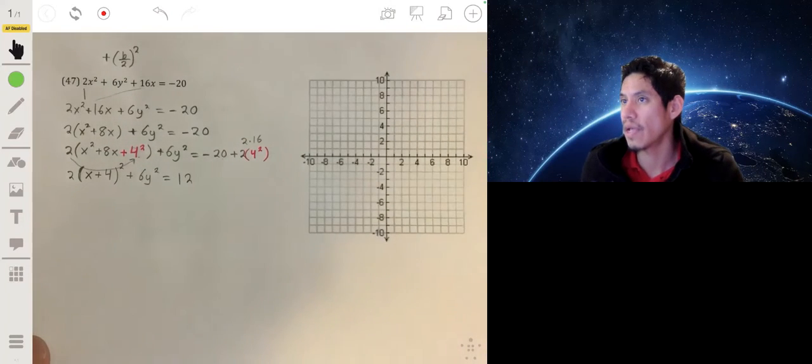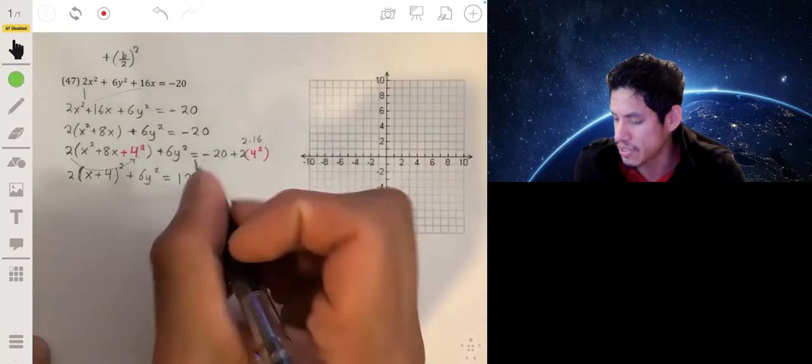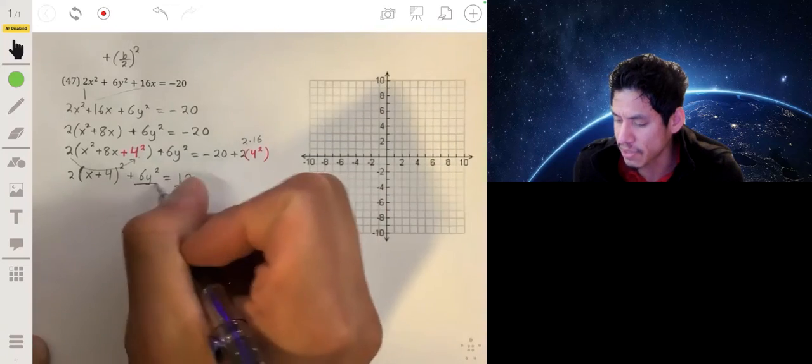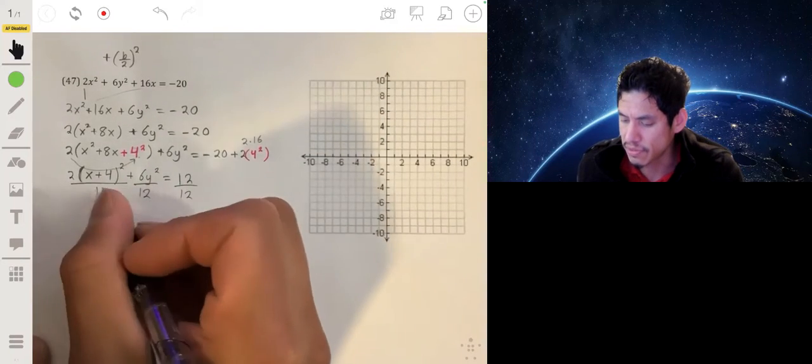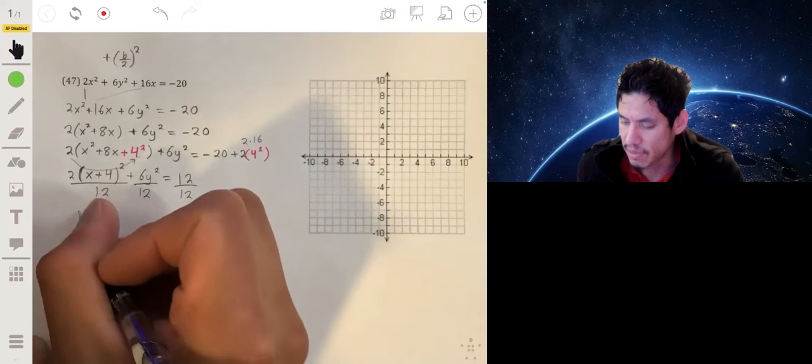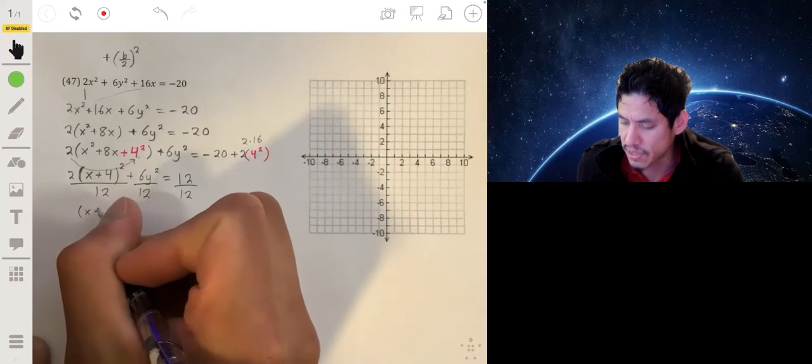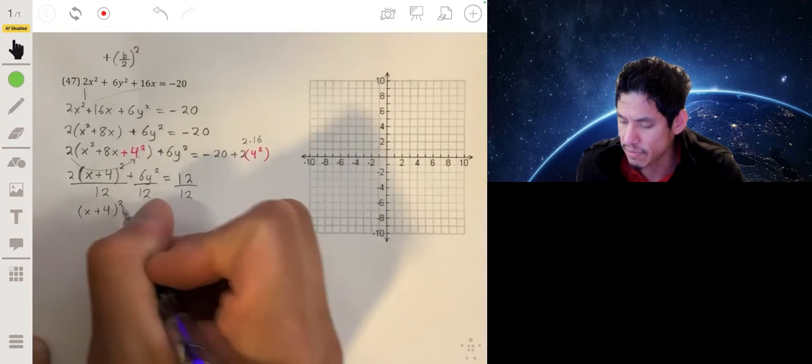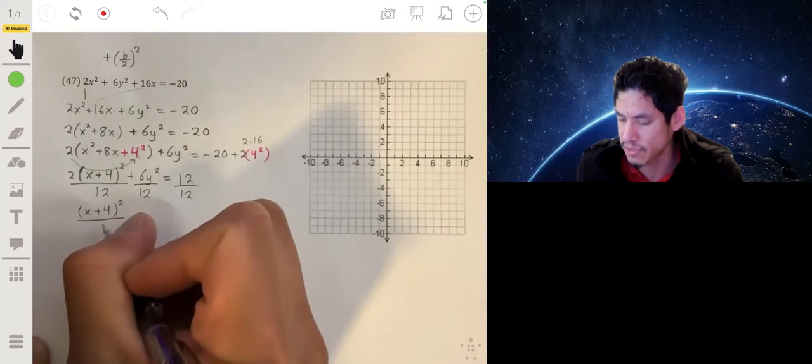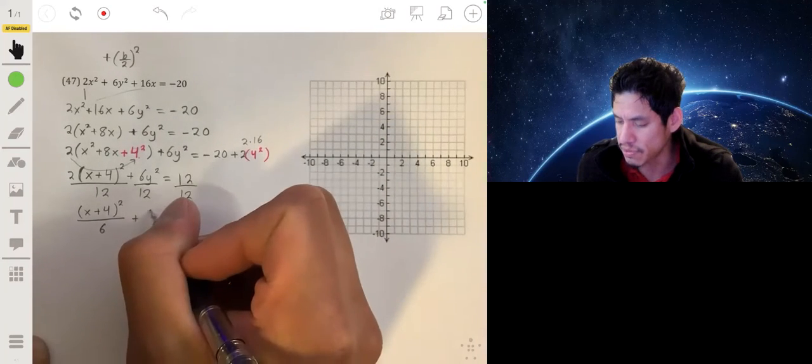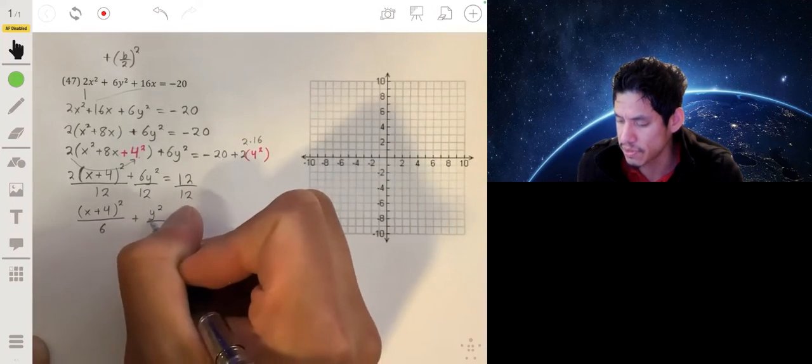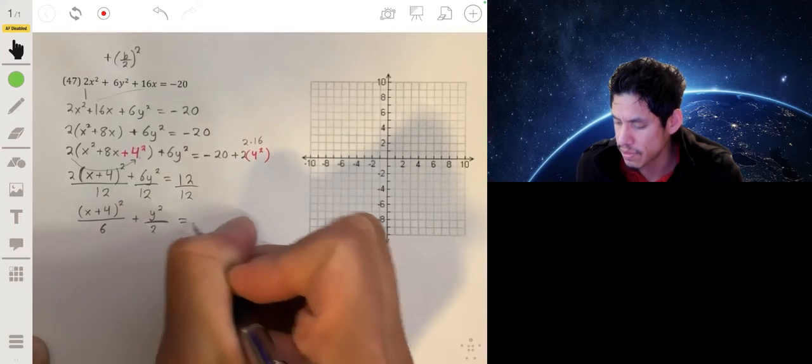And then what I do now is divide everything by 12 because I want to set the equation equal to 1. So I'll get 2 over 12, that'll be the same as 1 over 6, so we have x plus 4 squared over 6, plus 6 over 12, which is the same as 1 half, so plus y squared over 2 equals 1.